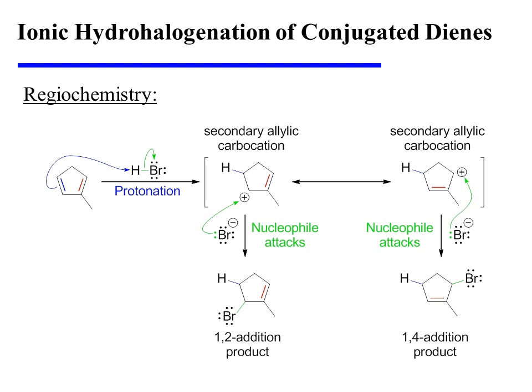On the other hand, protonation of the blue pi bond by HBr could also afford a conjugated carbocation, but in this case, that charge is spread over two secondary centers.